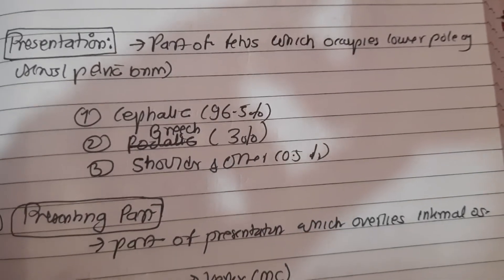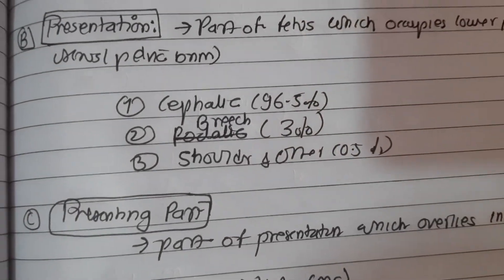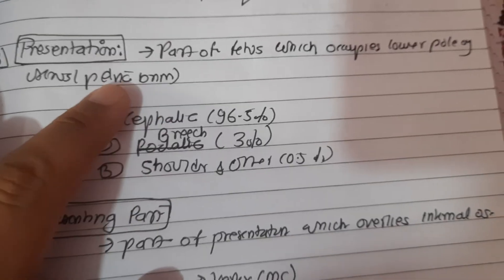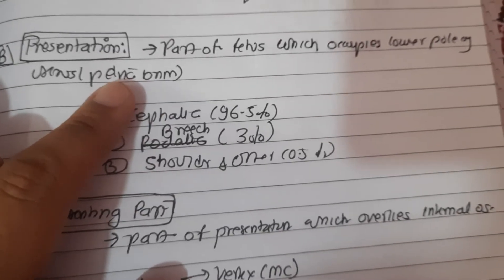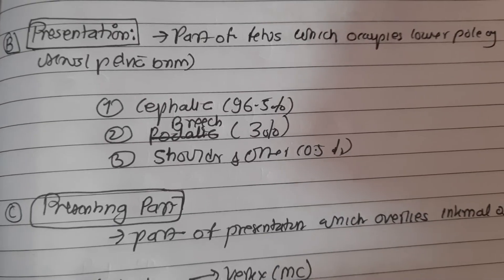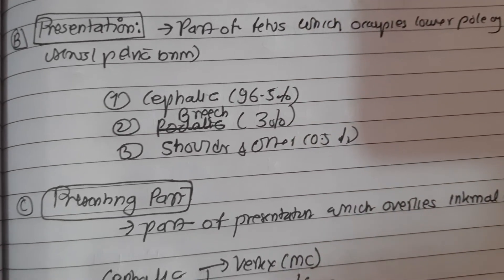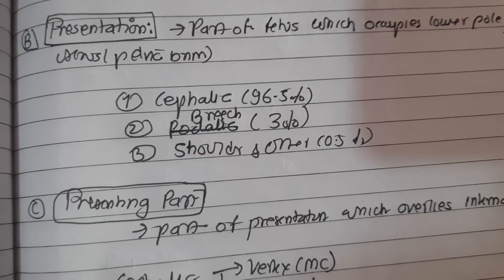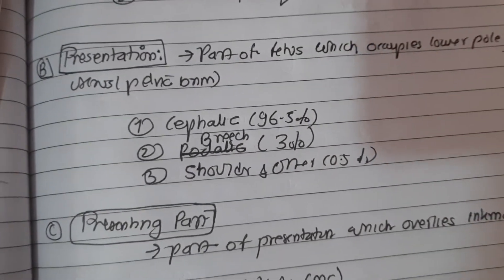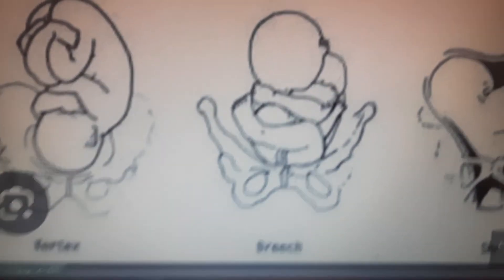The next terminology is 'presentation,' which refers to the part of the fetus that occupies the lower pole of the uterus or pelvic rim. Presentation may be cephalic, breech, shoulder, or other. Cephalic presentation is present in 96.5% of cases and is the most common.